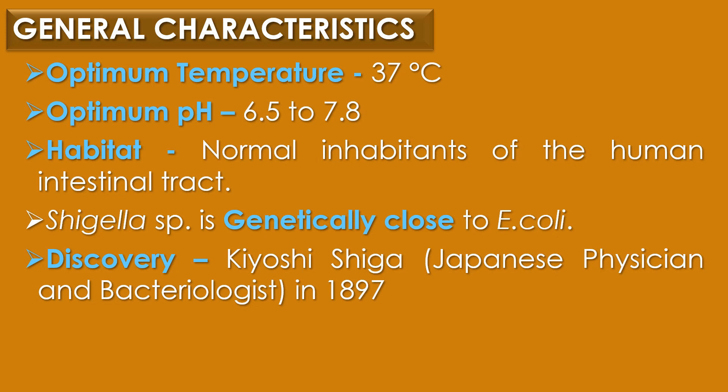Shigella species is genetically close to E. coli. The Shigella species was discovered by Kiyoshi Shiga, who was a Japanese physician and bacteriologist, and the discovery happened in the year 1897.